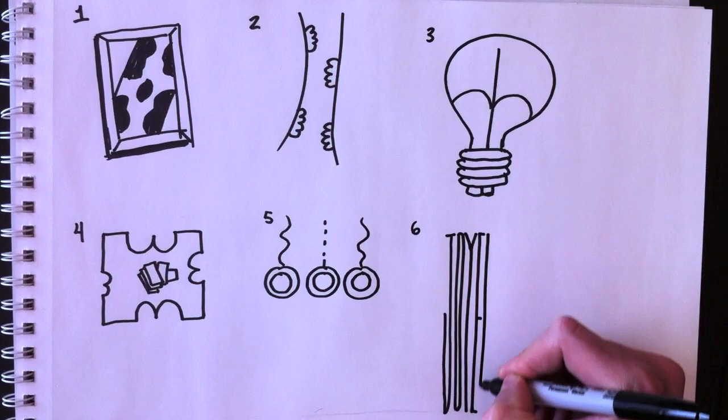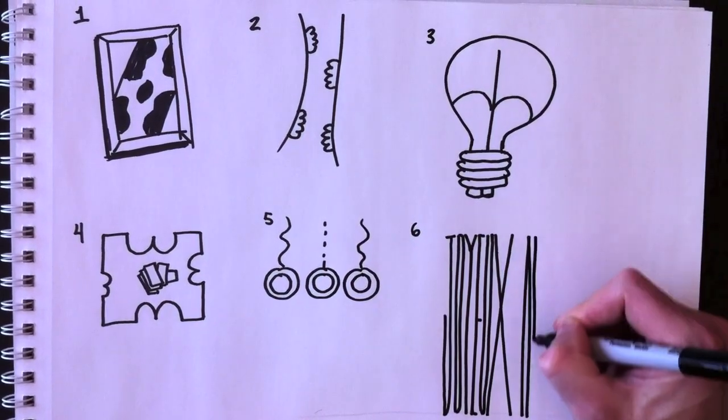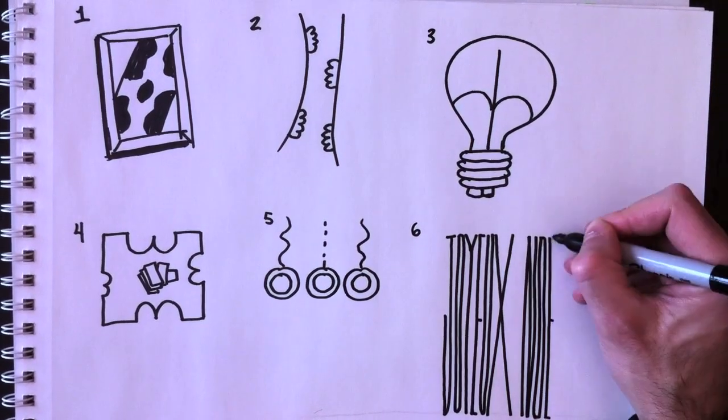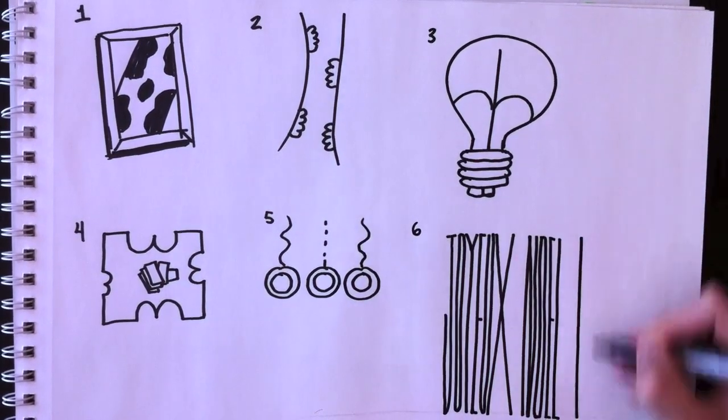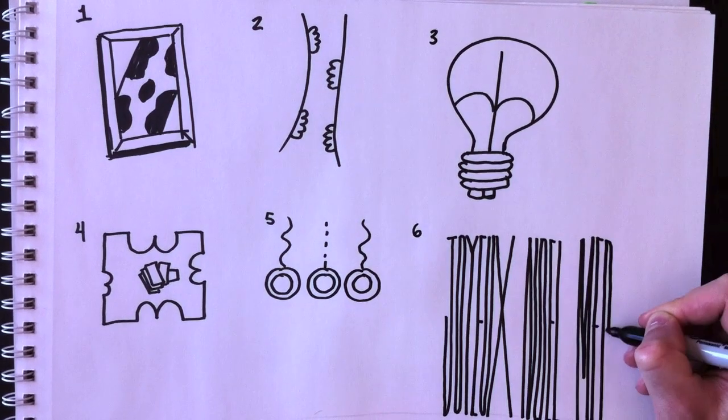Lorsqu'on la regarde tout droit, on voit pas ce qui est écrit parce que les lettres sont trop étroites. Mais lorsqu'on cante la feuille, on voit exactement quel est le message. So, this is really a drawing or drawing of letters that allows you to pass secret messages amongst your friends and family members.